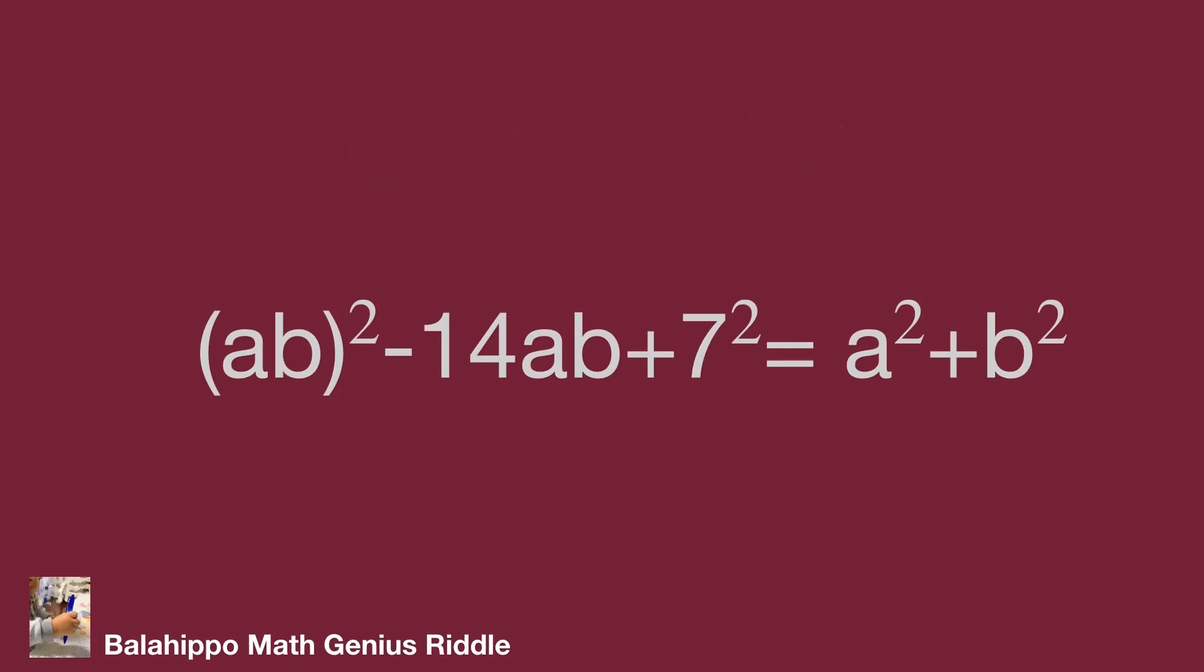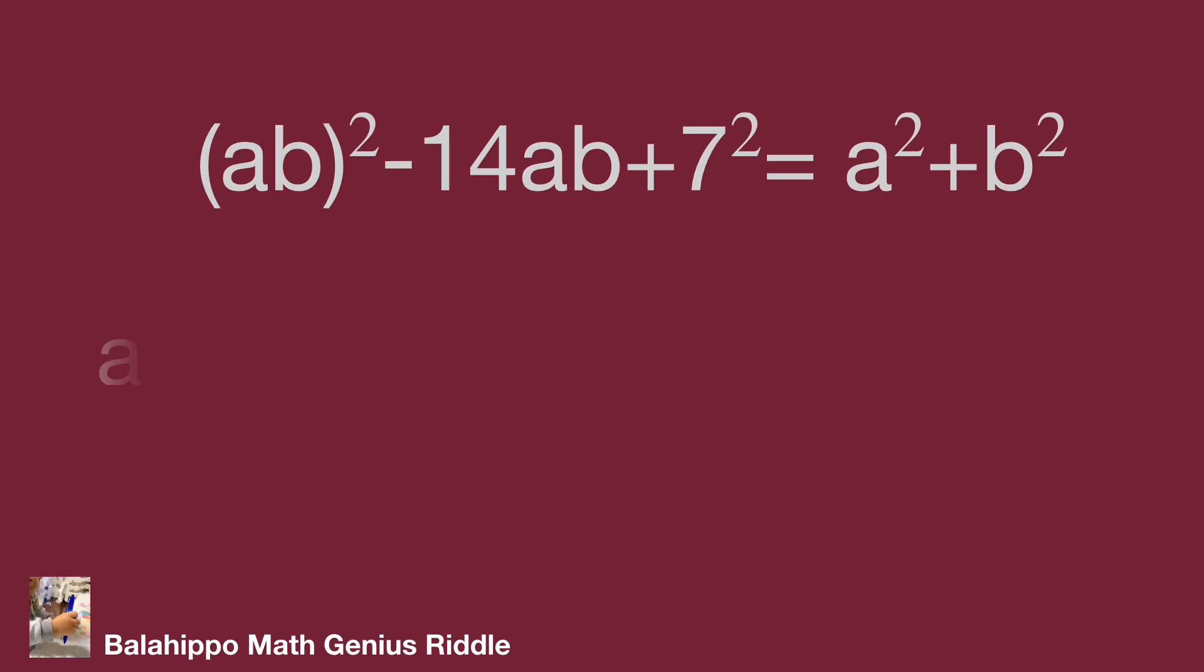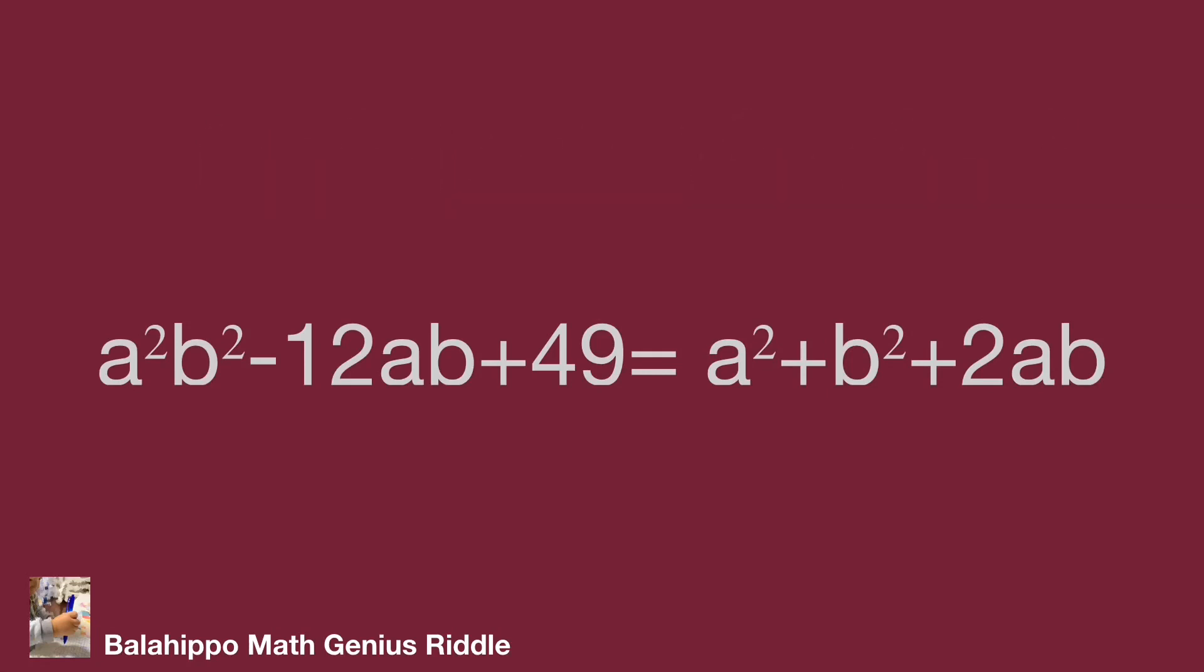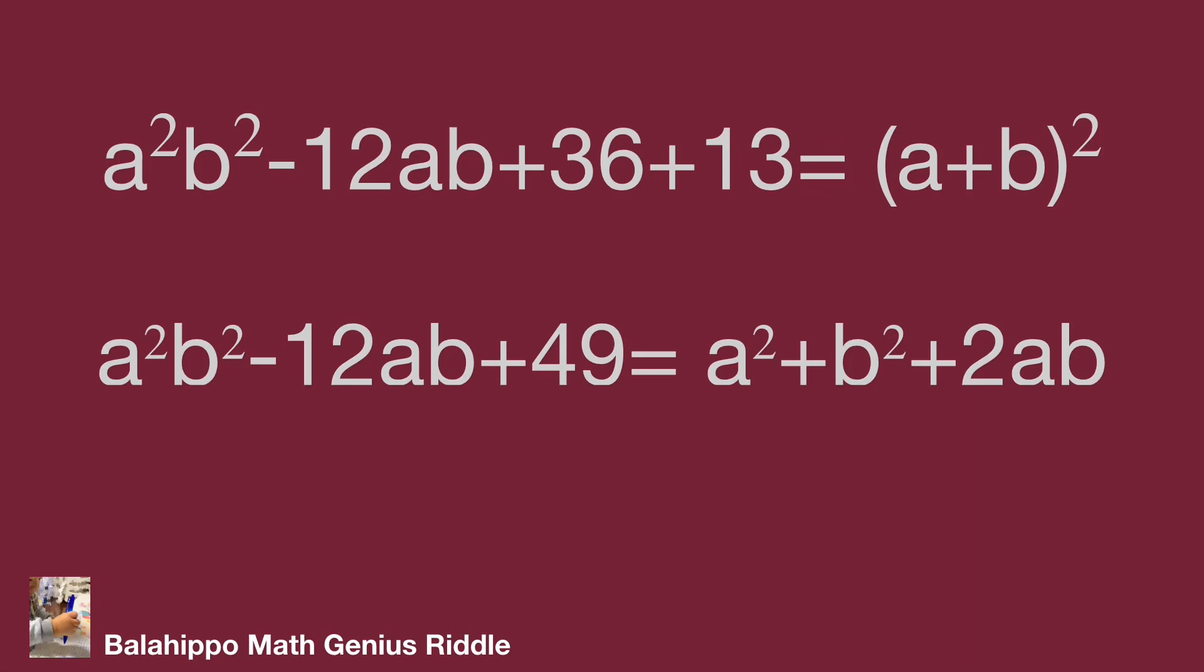Then add 2ab to both sides of the equation. Then I'm going to generate a square in the right side of the equation to become (a + b)².